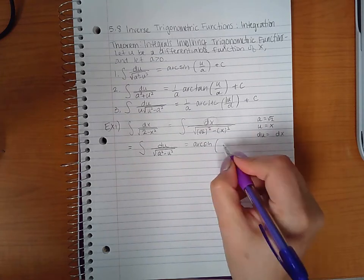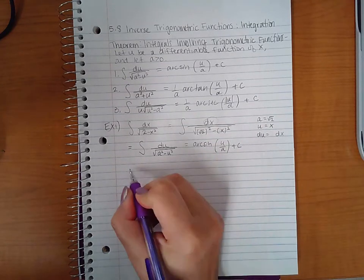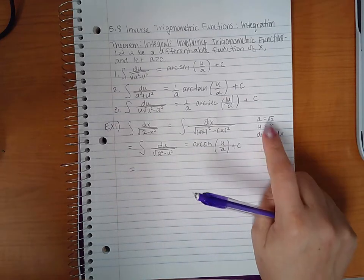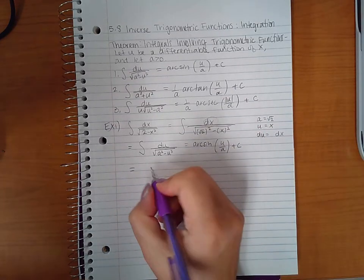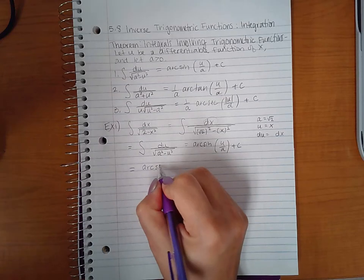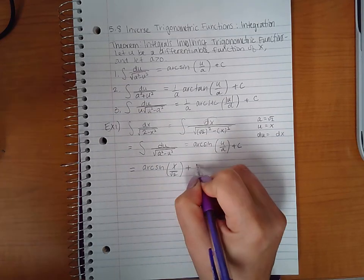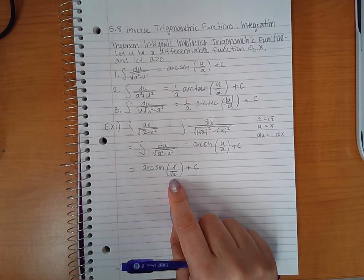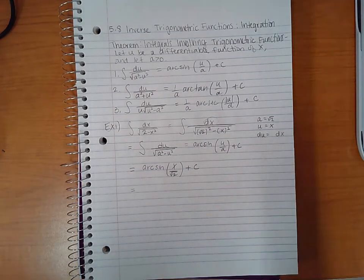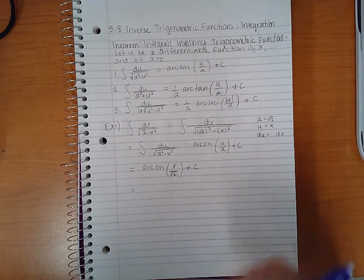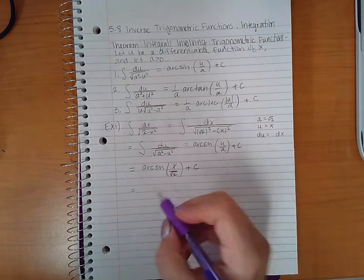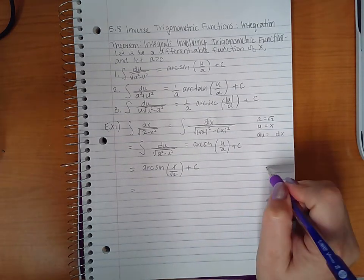Of u over a plus c. And then if we back sub, u is x and a is square root of two, so we get x over the square root of two plus c. Now most times the computer will accept this.